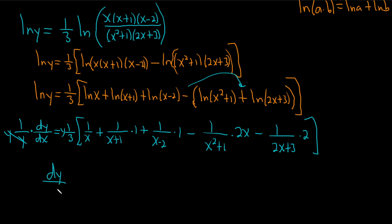So, dy dx. I'm going to write it like this. One-third y bracket, and then it's going to write all this again. So, 1 over x plus 1 over x plus 1 plus 1 over x minus 2 minus 2x over x squared plus 1 minus 2 over 2x plus 3.